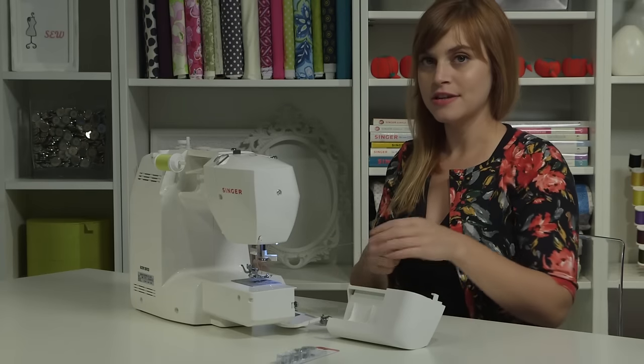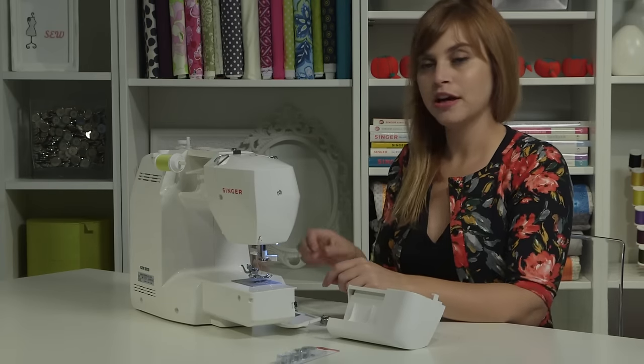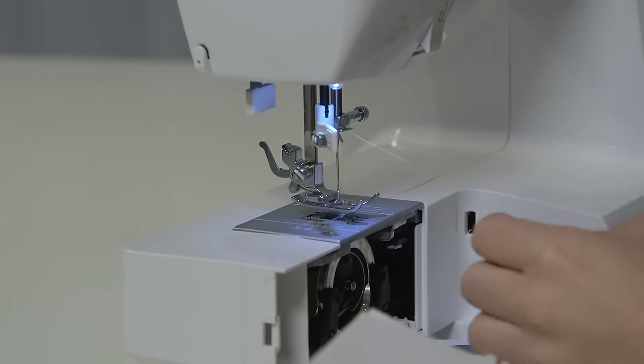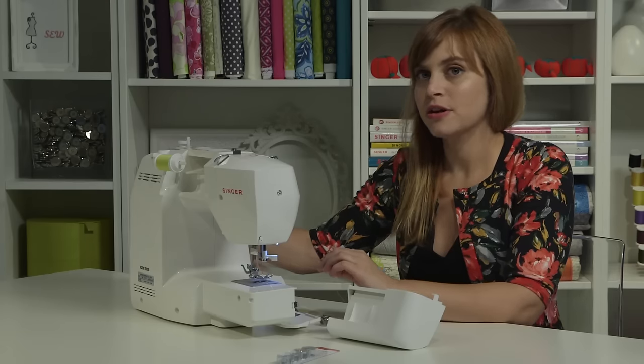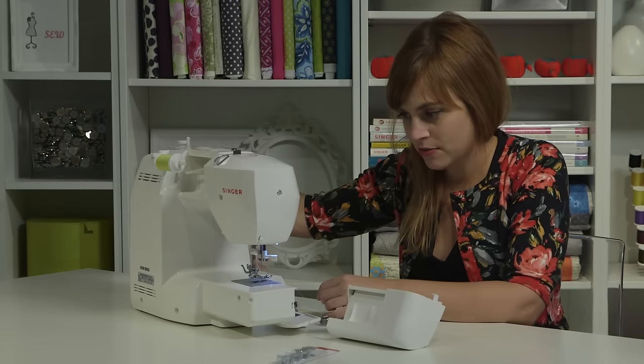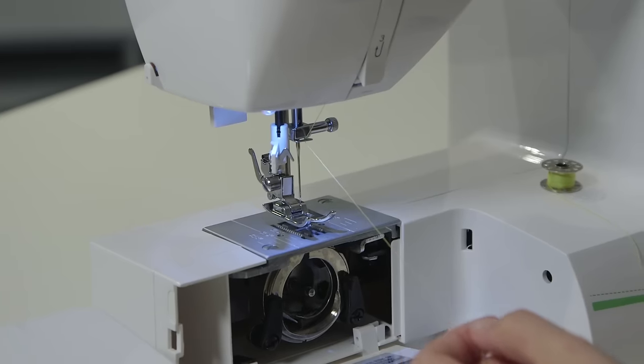To thread the eye of the needle, you can thread it manually, front to back, or you can use the needle threader to make it a little bit easier on yourself. To use the needle threader, you want to make sure that the needle is in the highest position. So go ahead and turn the hand wheel until you see the needle go to the highest position.